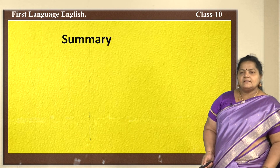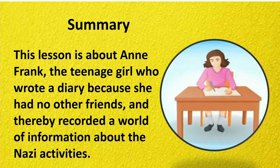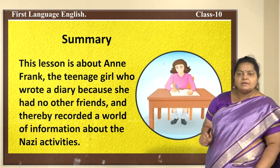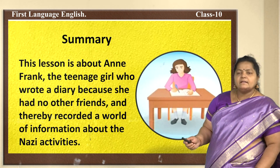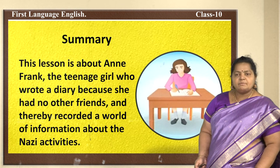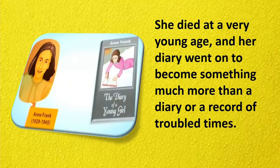Now we will move to the lesson. Today we are going to learn about Anne Frank — a teenage girl who wrote a diary because she had no other friends, and thereby recorded a world of information about the Nazi activities. Without this diary we would not have known what happened to her. She died at a very young age, and her diary went on to become something much more than a diary or a record of troubled times.